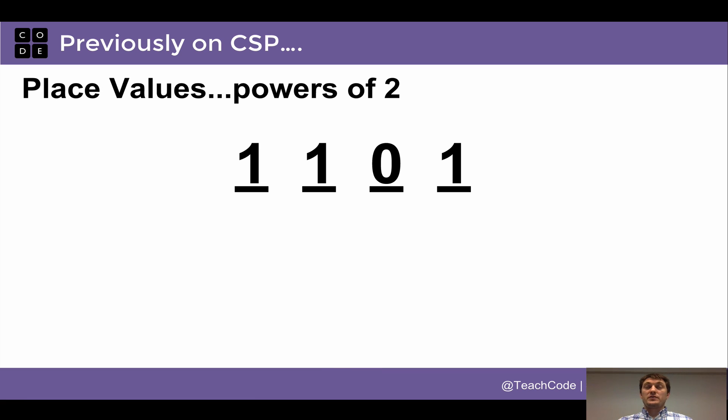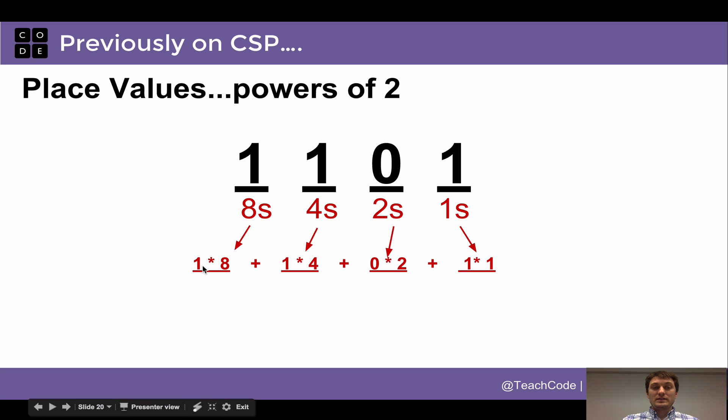So place values in a binary number, instead of multiplying by ten every time, multiply by two. So for this binary number, we would say that there's a one in the eights place, a one in the fours place, a zero in the twos place, and a one in the ones place. And we can figure out what number this is by multiplying one times eight plus one times four plus zero times two plus one times one, which is 13. So this binary number maps to the digit or the decimal number 13, and we do it just by multiplying place values.